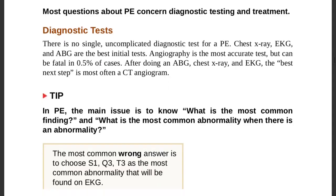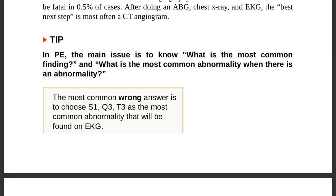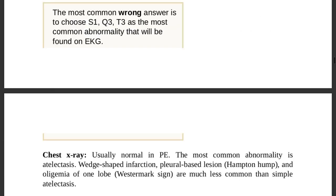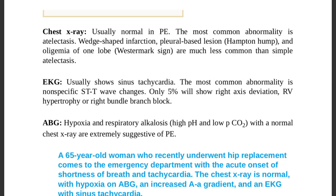In pulmonary embolism, the most common wrong answer is choosing S1Q3T3 as the most common ECG abnormality. Chest x-ray is usually normal; the most common abnormality is atelectasis. Wedge-shaped infarction, pleural-based Hampton's hump, and Westermark sign (oligemia of one lobe) are much less common than simple atelectasis.